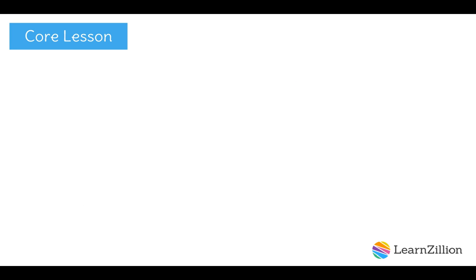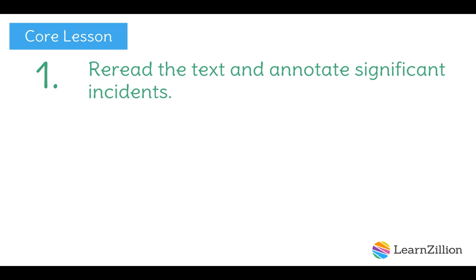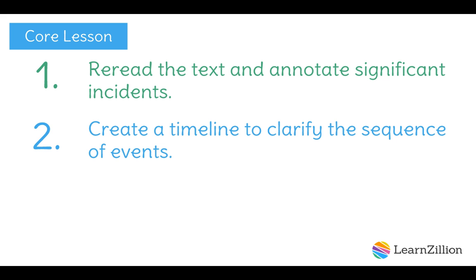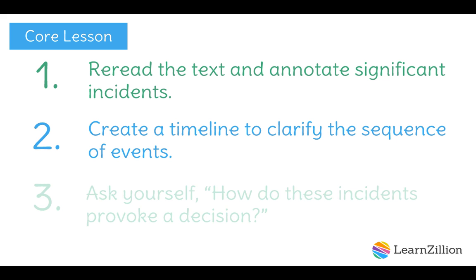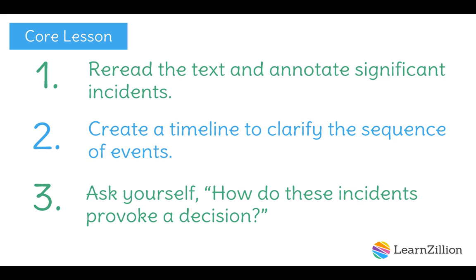Today, we're going to be exploring our question about the narrator and what series of events led up to his decision, and we're going to be using these three steps to guide us. Number one, we read the text and annotate significant incidents. Number two, create a timeline to clarify the sequence of events. And number three, ask yourself how do these incidents provoke a decision?